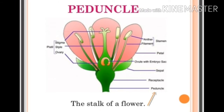Children, you can see in this picture the different parts of the flower. Peduncle — this is the stalk of the flower by which it is attached to the stem of the plant.